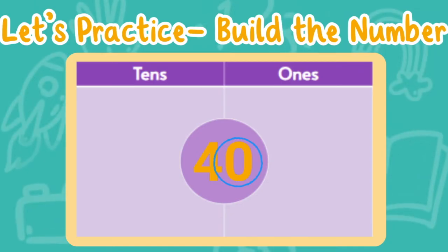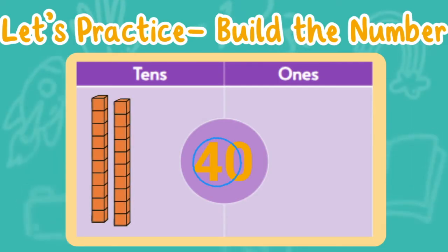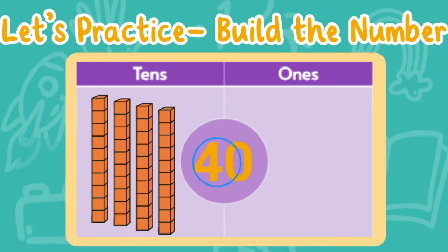Now let's look at the number 40. First, let's look at the ones place. I see a zero in the ones place. How many ones do I need if I see the number zero? That's right — I need zero ones. I don't have any ones in the number 40. Now let's look at the tens place — I see the number four. Let's count the ten sticks together: one, two, three, four. There are four ten sticks and zero ones cubes in the number 40. Because there are four tens, my number is 40.